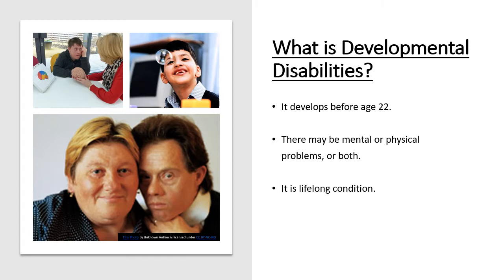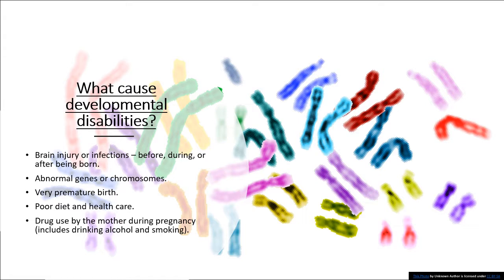Families are more likely to be involved in the care of people with developmental disabilities, whether children or adults. A caregiver can make a difference with EARS — empathy, acceptance, respect, and support. Developmental disability usually develops before age 22, may involve mental or physical problems or both, and is a lifelong condition. Causes include brain injury or infections before, during, or after birth; abnormal genes or chromosomes; very premature birth; poor diet and health care; or drug use by the mother during pregnancy, including drinking alcohol and smoking.